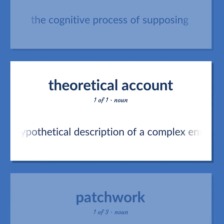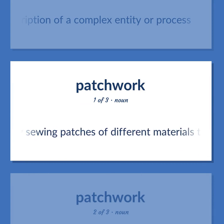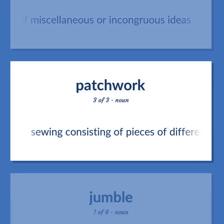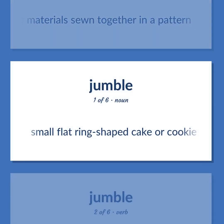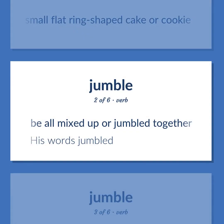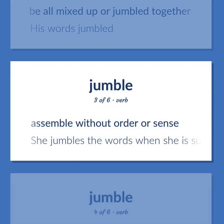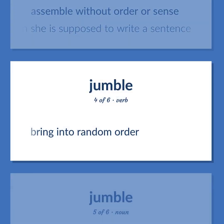A hypothetical description of a complex entity or process. A quilt made by sewing patches of different materials together. A theory or argument made up of miscellaneous or incongruous ideas. Sewing consisting of pieces of different materials sewn together in a pattern. Be all mixed up or jumbled together — his words jumbled. Assemble without order or sense — she jumbles the words when she is supposed to write a sentence. Bring into random order.